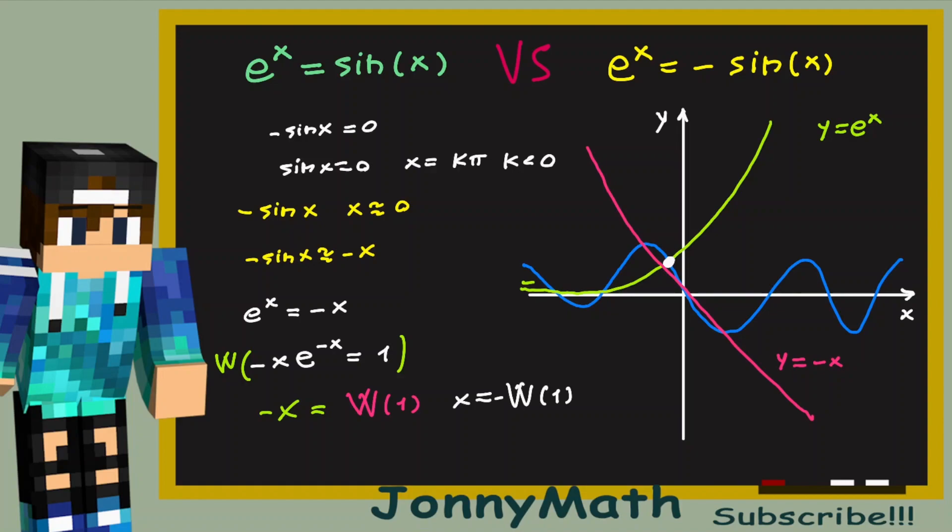So our solution to the second equation isn't just x equals k pi for k less than zero. It is also x equals to minus the W function of one. How cool is this?